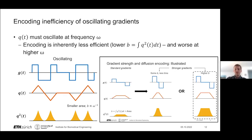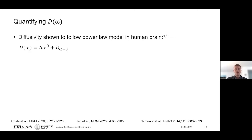It is worth noting that using strong gradients for oscillating gradients would enable achieving a higher b-value simply by keeping the sequence timing fixed and accumulating a greater integral of q². Ultimately, there wouldn't be much value in trying to achieve such a b-value in a shorter time. Despite this encoding inefficiency, there has been great interest in quantifying D(ω), because it may reveal microstructural properties we may not otherwise be able to infer.